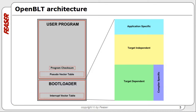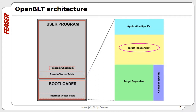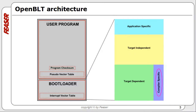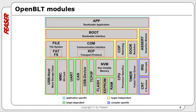Zooming in on the bootloader's source code, you'll see that it is divided up into four categories: application specific code, target independent code, target dependent code, and compiler specific code. In the application specific part, you can configure and tweak the bootloader's behavior to fit your needs, without having to change anything in the bootloader core.